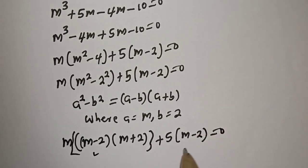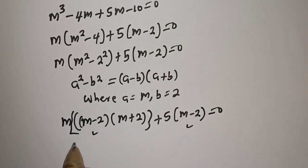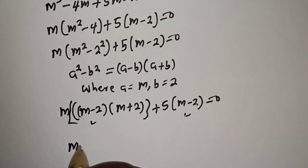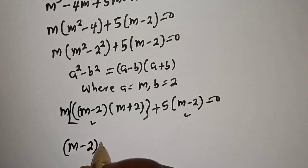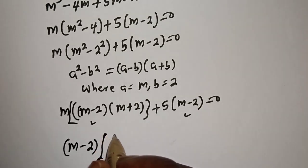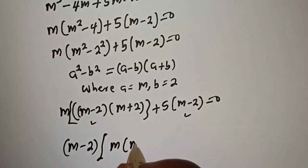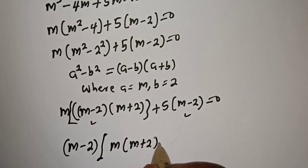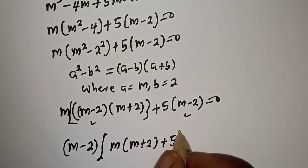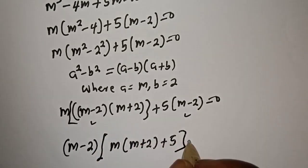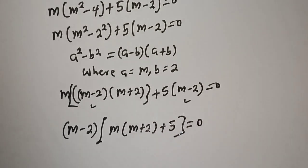Since (m minus 2) is common in both terms, we factor it out to get (m minus 2) times [m(m plus 2) plus 5] equals 0.